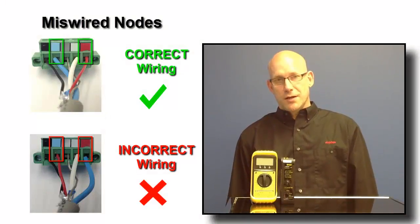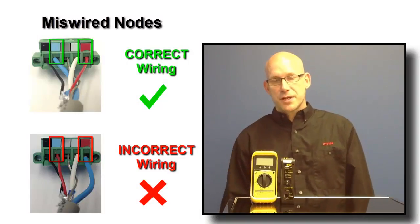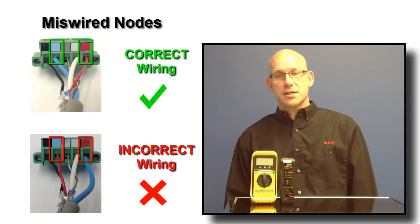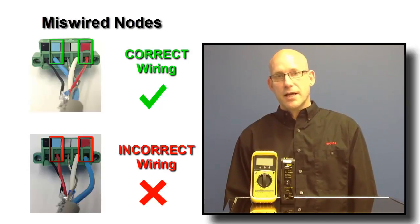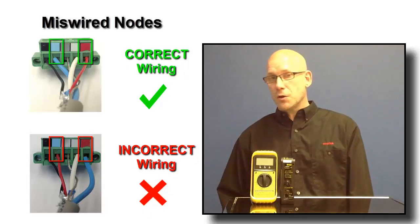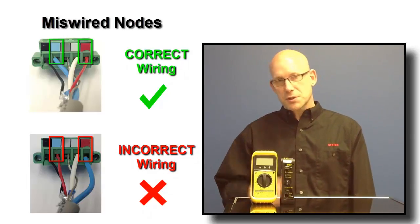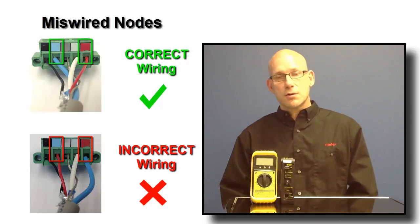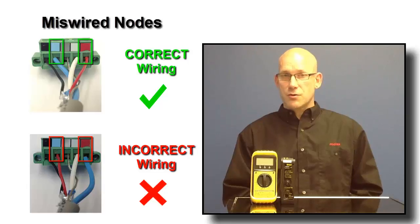Let's take a look at item number one on the top five DeviceNet problems list: miswired nodes. Both of these meters will be able to identify the frequency of bus errors that are occurring on the network and by node. So if you see a high incidence of bus errors for node number five, for example, each of these meters will tell you. You can then go to node number five, double check the connections to that node, and make sure all the wiring is sound and secure.